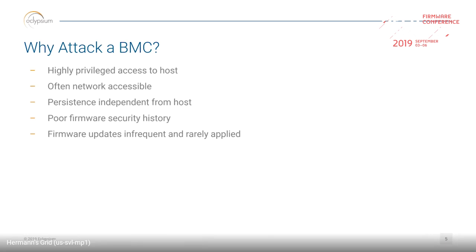Usually a BMC is network accessible — it's supposed to be out of band, and the whole point of remote management is that I don't have to be there. Now, assuming I compromise a BMC, it's really a computer that's separate from the host. So if I compromise a BMC, I get persistence independent of the host. You can format the disks on the host, you can replace the firmware — it doesn't matter if I'm on the BMC. You have to actually replace the BMC's firmware to eliminate that persistence.